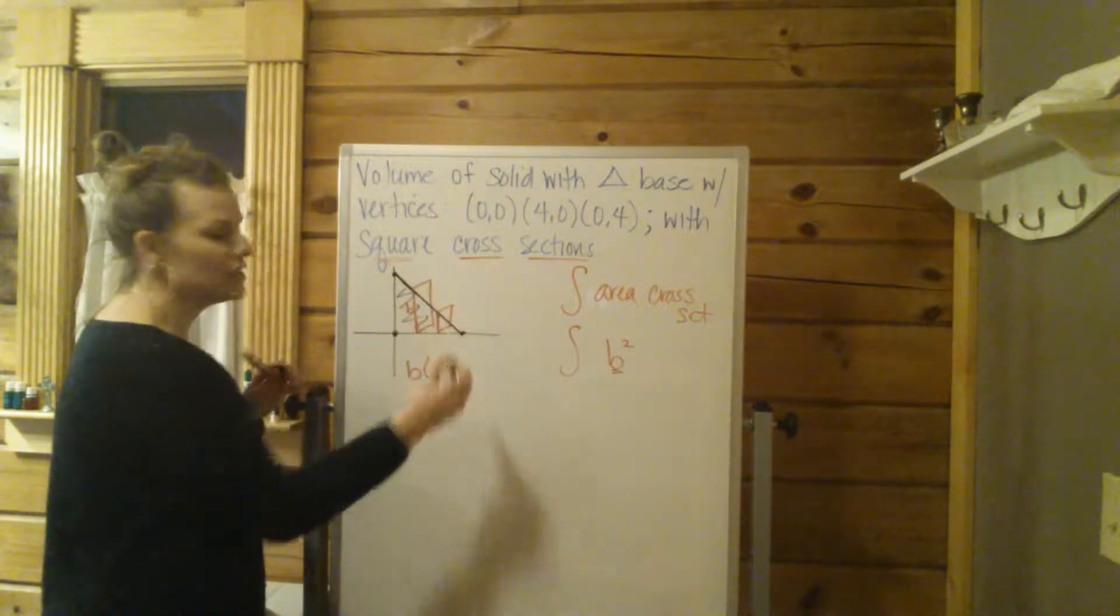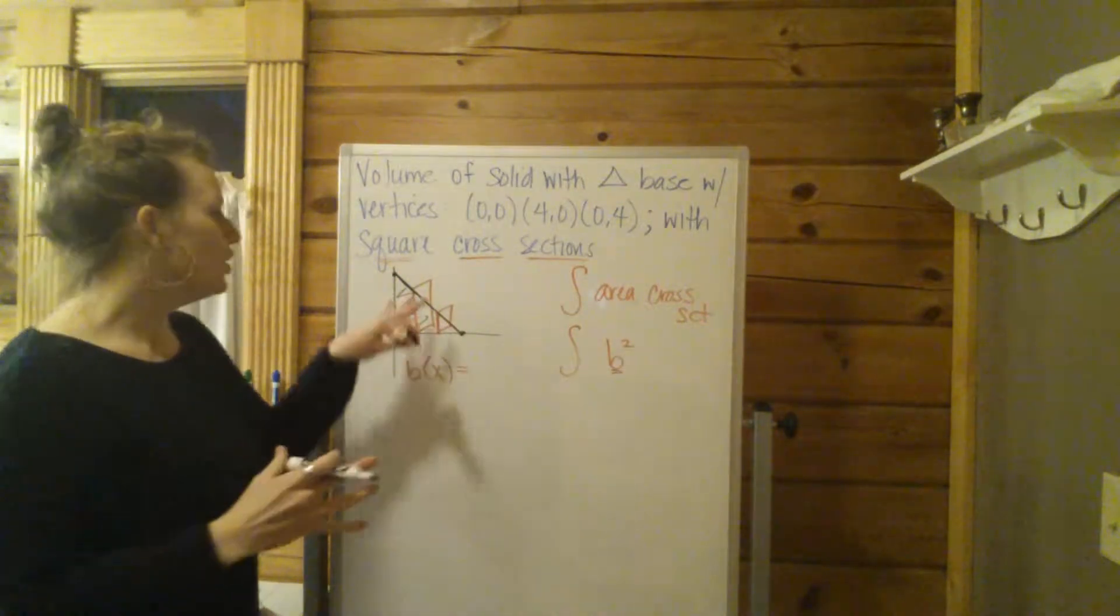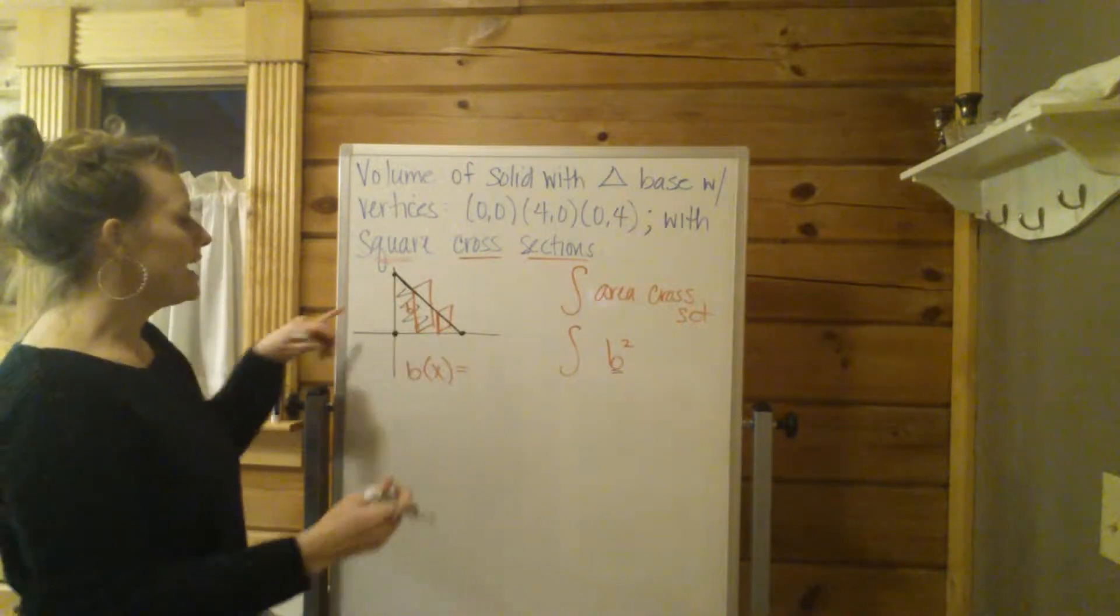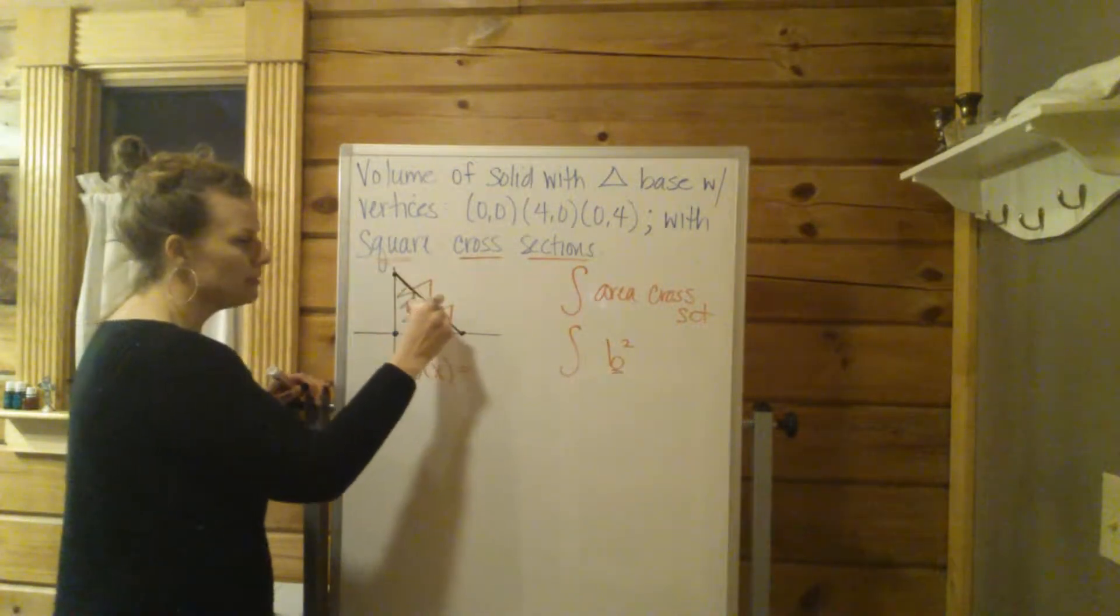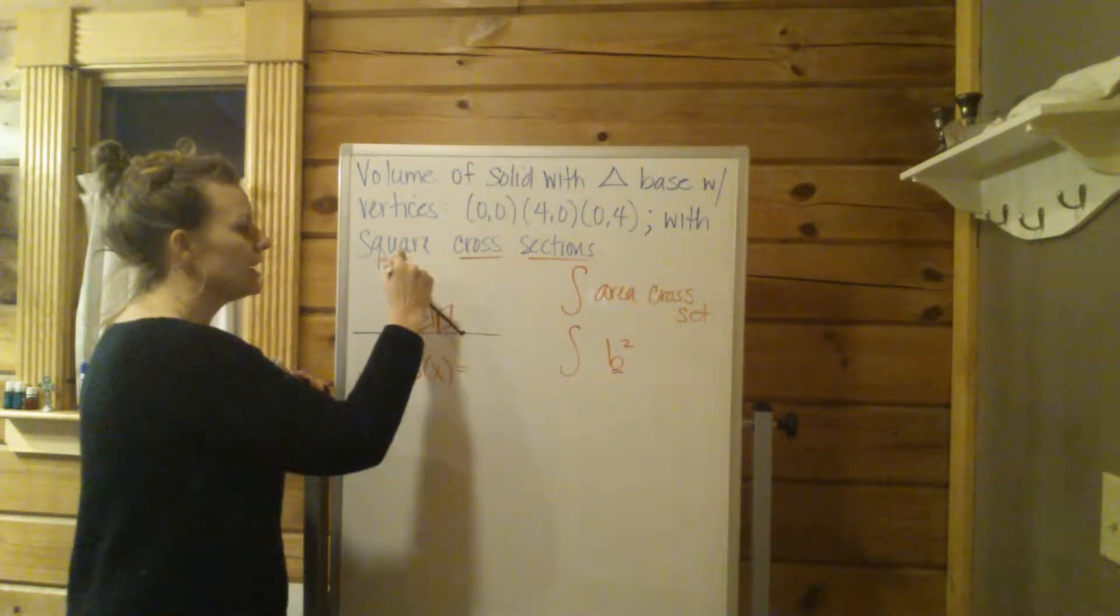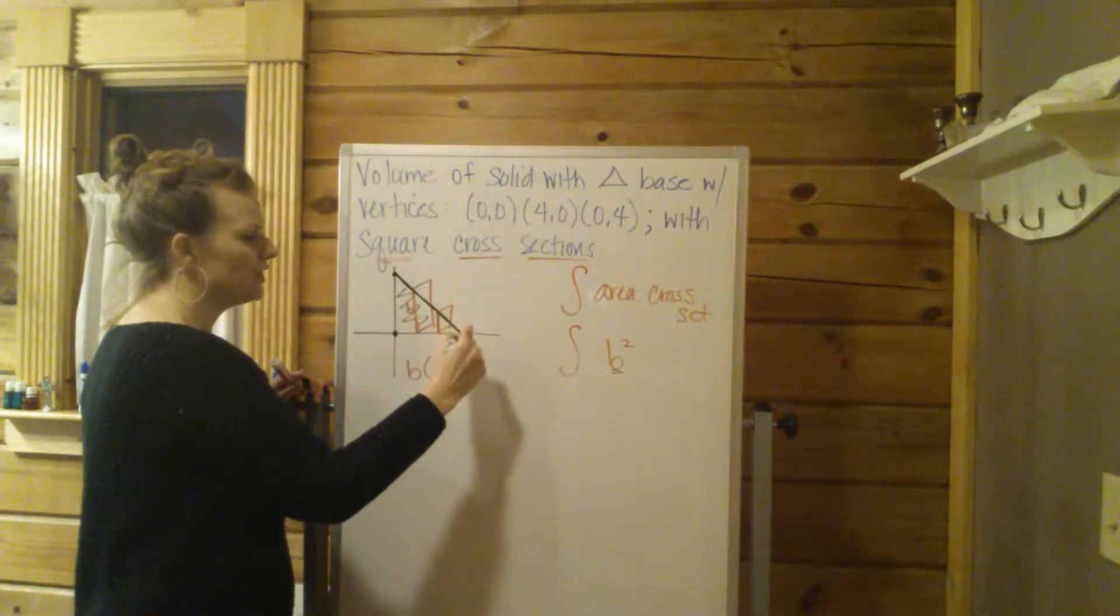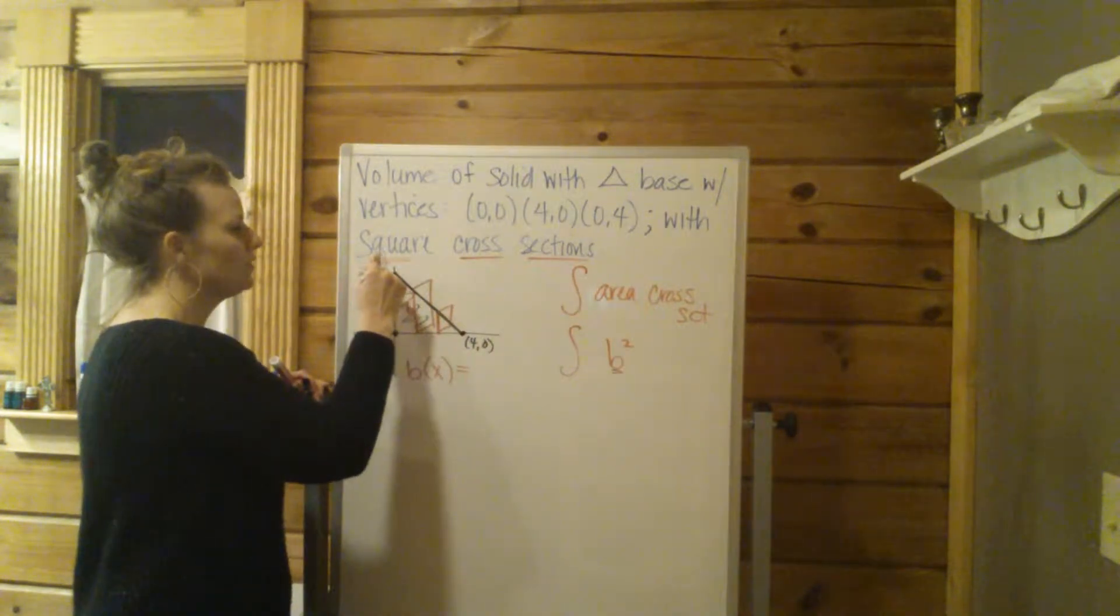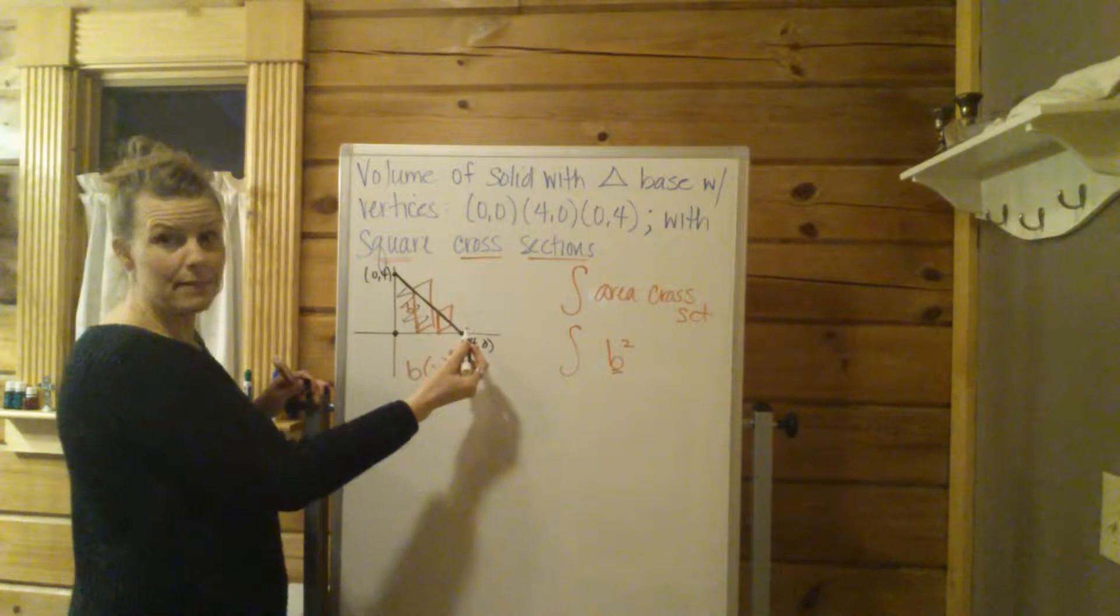Writing the equation of that line. Sometimes your equation will be a semicircle. We've seen that before. In this case, the equation of this line, the boundary of the floor of the solid. So that's going to be, let's figure this out. This is 4,0, 0,4. Y equals mx plus b.